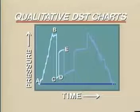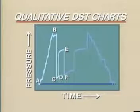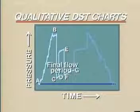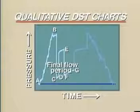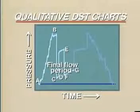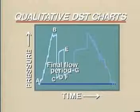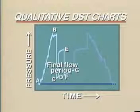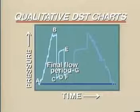The test tool is then opened again from E to F, and the final flow period occurs from F to G. The shape of the build-up will depend upon the properties of the formation and the produced fluids. The duration of this period will depend upon whether we are doing an onshore, open-hole test, or an offshore, cased-hole test.